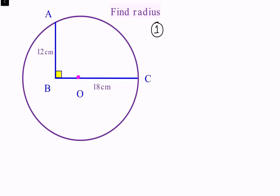For the first approach we will join AO. Now AO is nothing but the radius of the circle, so we'll call it capital R. OC is also radius capital R. BO will be 18 minus R. So we'll apply the Pythagoras theorem in triangle ABO.